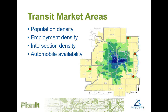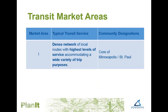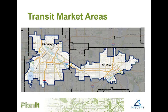Transit market area one includes the densest network of local routes with the highest level of service. This is possible due to the high population and employment density, an interconnected network of streets, lower automobile availability, and proximity to employment centers and other destinations. This map shows the extent of transit market area one, which is limited to the cores of both Minneapolis and St. Paul.